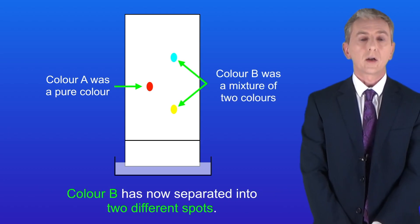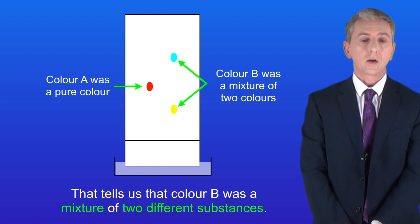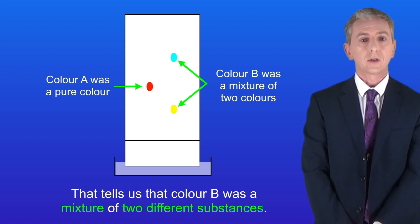However we can see that colour B has now separated into two different spots and that tells us that colour B was actually a mixture of two different substances.